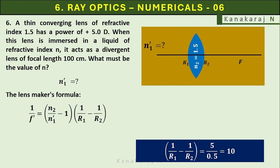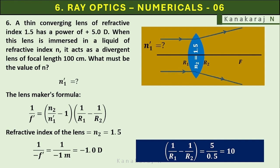Here, the f prime is given as 100 centimeters and it is being a divergent lens, the value is minus. So, 1 upon minus f prime will be equal to 1 upon minus 1 meter equals minus 1.0 diopters. It is a divergent lens. Look at the diagram. It is a divergent lens because n1 prime has to be greater than n2.